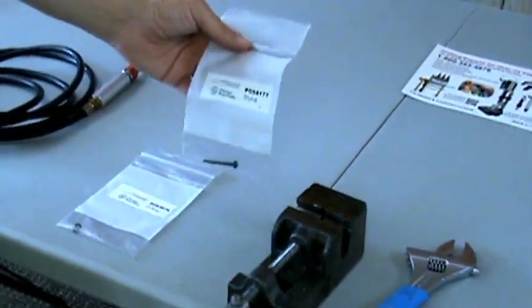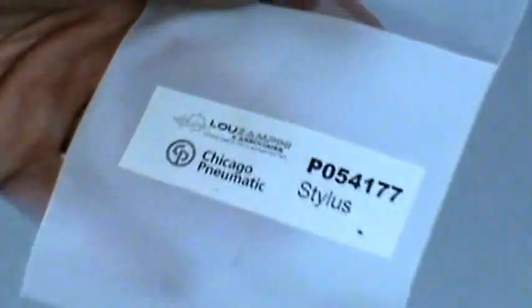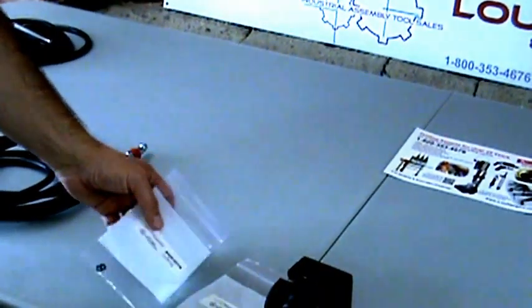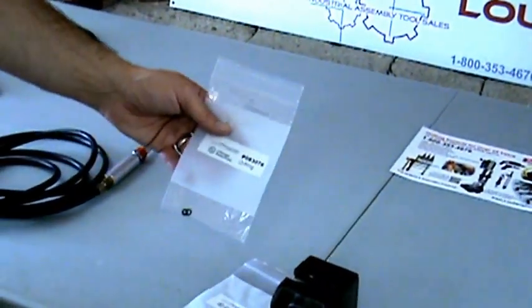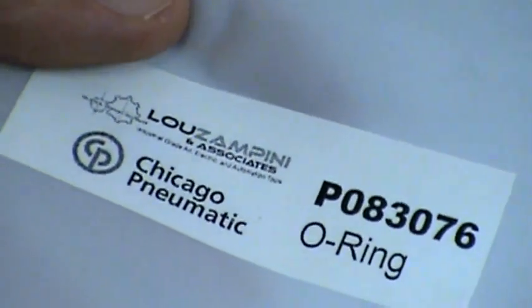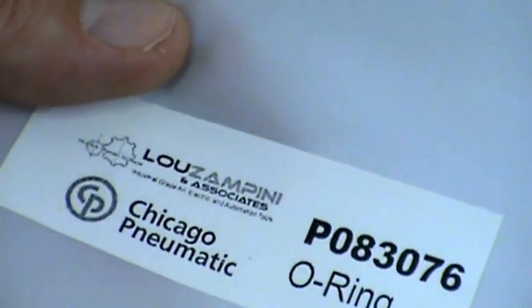Stylus replacement is the Chicago Pneumatic part number P054177. We need one of those. And the O-rings that go over the stylus are Chicago Pneumatic part number P083076, and there are two of those.